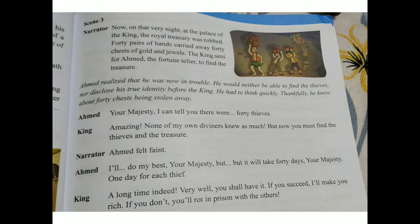Now, one night at the palace of the king, the royal treasury was robbed. Forty pairs of hands carried away forty chests of gold and jewels. The king sent for Ahmed the fortune teller to find out the treasure. Ahmed realized that he was now in trouble — he would neither be able to find the thieves nor disclose his true identity before the king. He had to think quickly. Thankfully, he knew about forty chests being stolen.